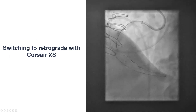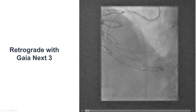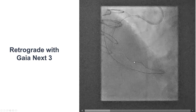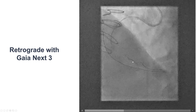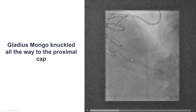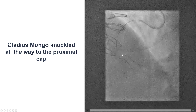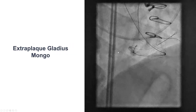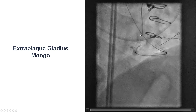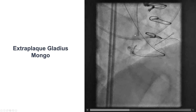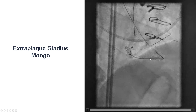Given the difficulties, we decided to switch to the retrograde approach. We used a Corsair XS microcatheter, and then using a Gaia NEX3 wire, we were able to puncture the distal cap, which was also calcified. We then knuckled a Gladius Mongo guide wire that advanced all the way to the proximal cap. At this point, we had the antegrade microcatheter, the retrograde Corsair XS going through the saphenous vein graft, and the Gladius Mongo close to the proximal cap.